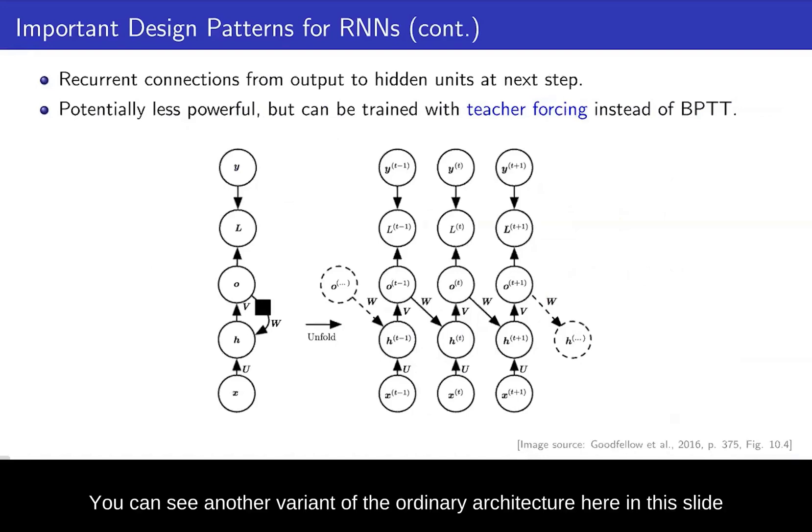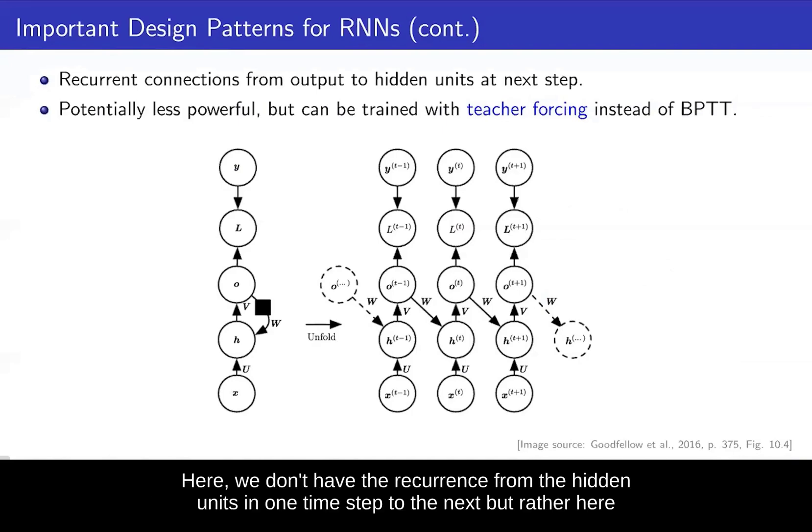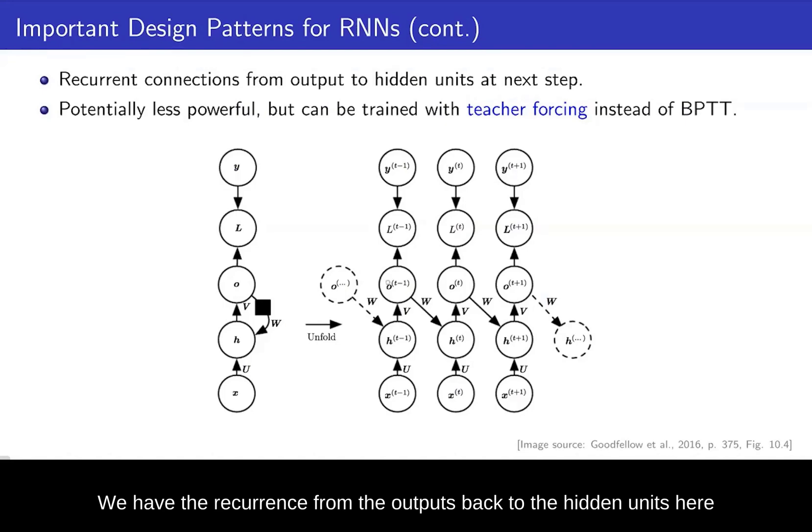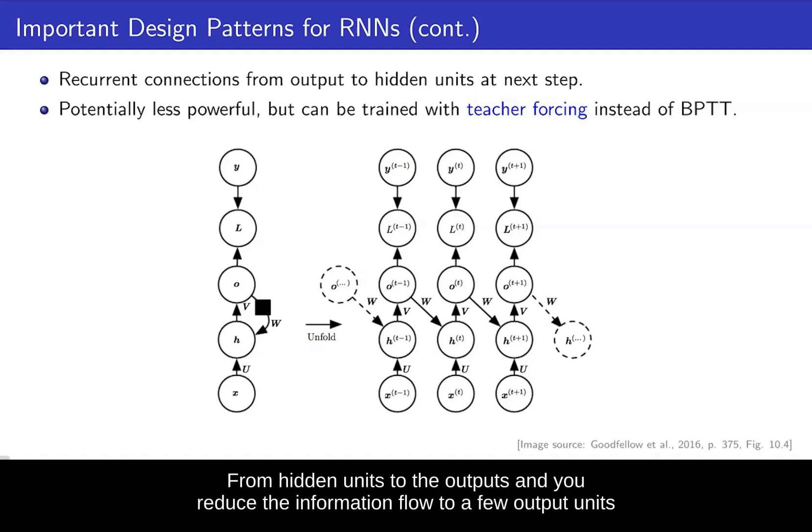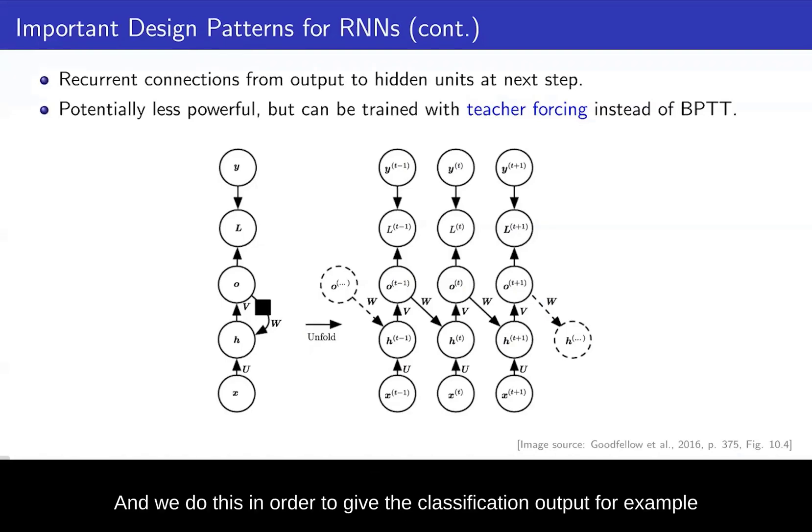You can see another variant of the ordinary architecture here. Here we don't have the recurrence from the hidden units in one time step to the next, but rather we have the recurrence from the outputs back to the hidden units here. So this might potentially not capture the long-term dependencies in the input. This is primarily because we go from hidden units to the outputs and reduce the information flow to a few output units, whereas the hidden units have much richer representations as they have more units.